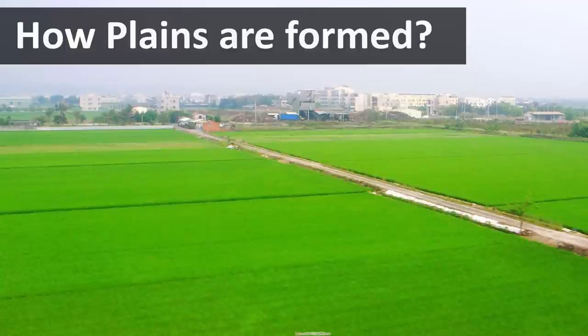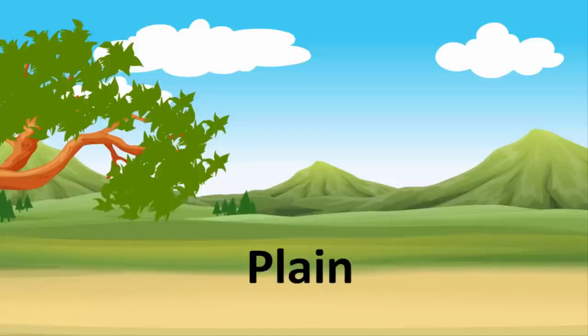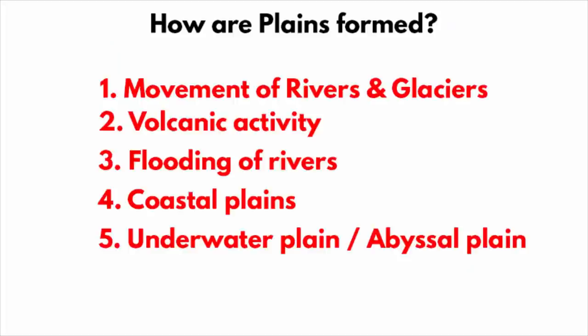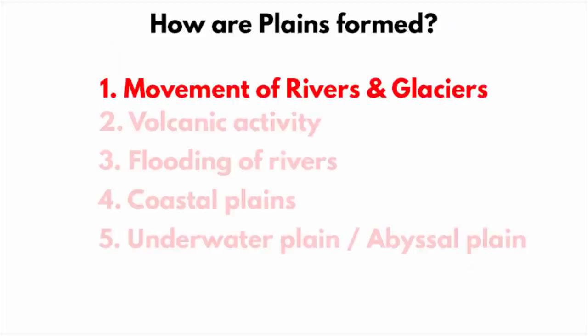In this video, we will learn how plains are formed. A plain is a broad area of flat land. Plains are one of the major landforms on earth. Plains form in many different ways.